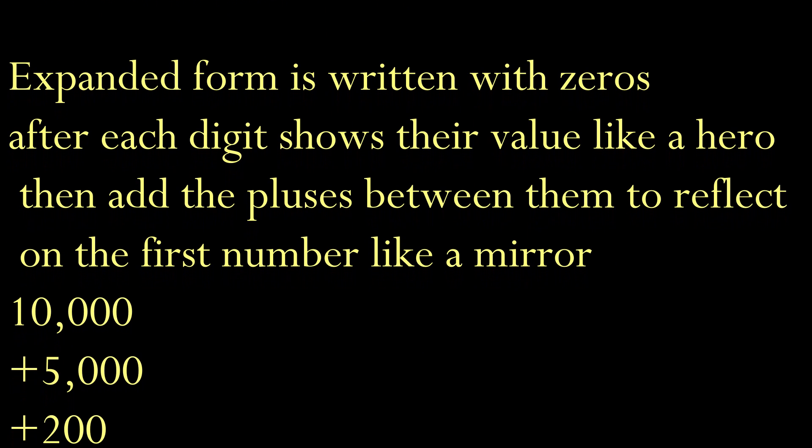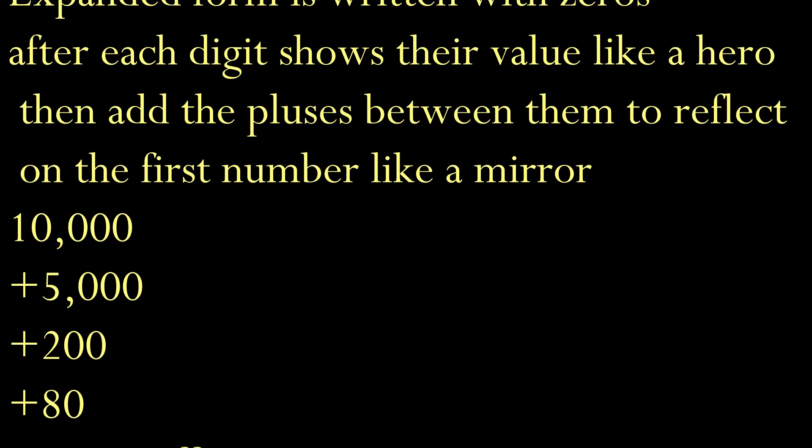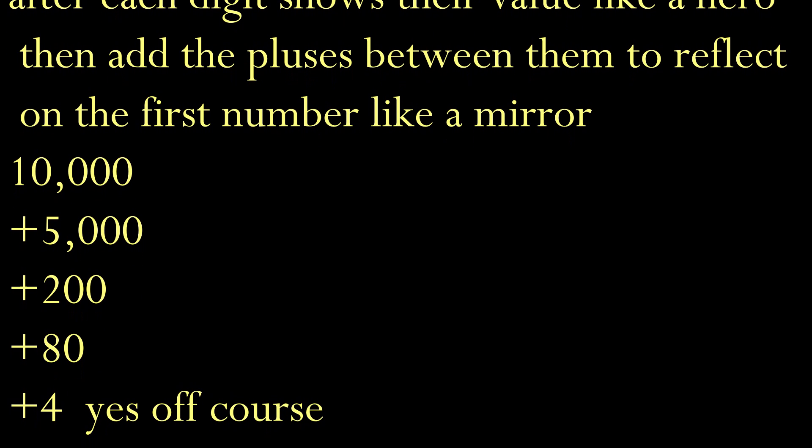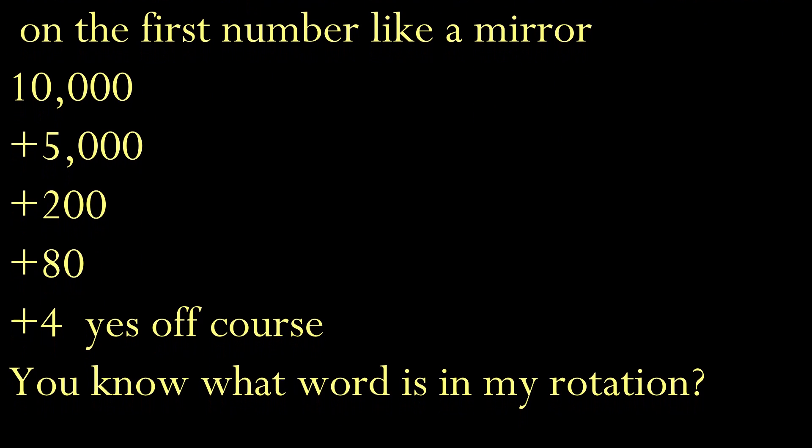Expanded form is written with zeros after each digit shows their value like a hero. Then add the pluses between them to reflect on the first number like a mirror.